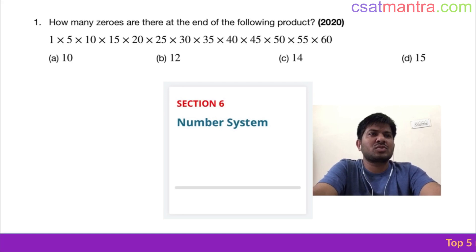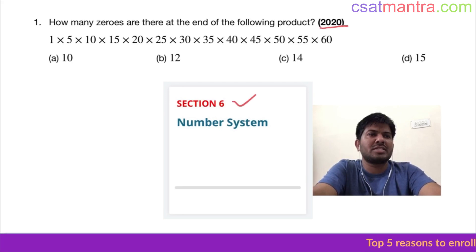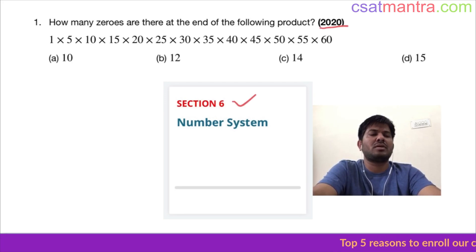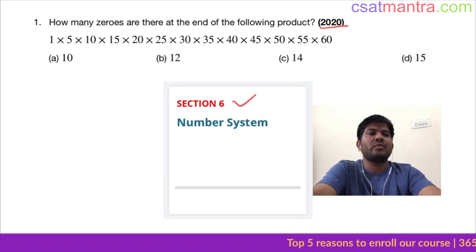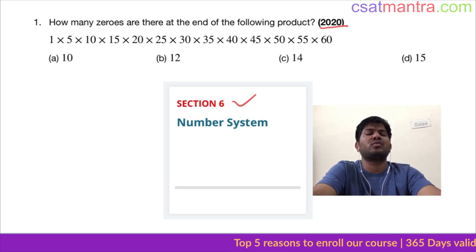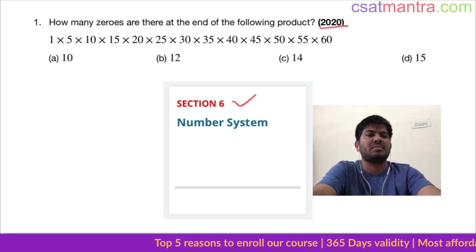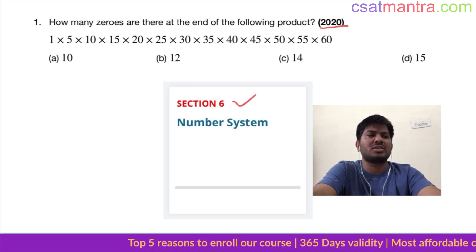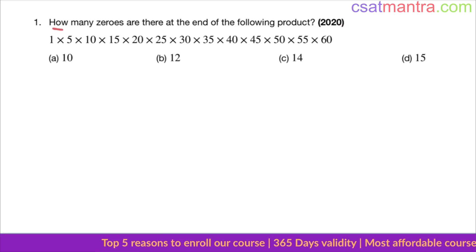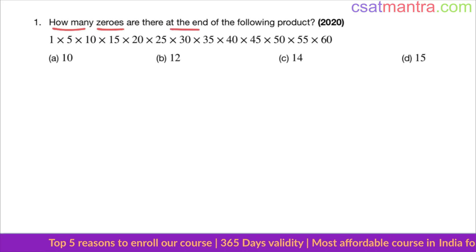Namaskaram friends. This question is asked in 2020 from the number system chapter, based on counting — a very important chapter. Every year four to five questions will be asked based on number system. Let's solve this question: how many zeros are there at the end of the following product?